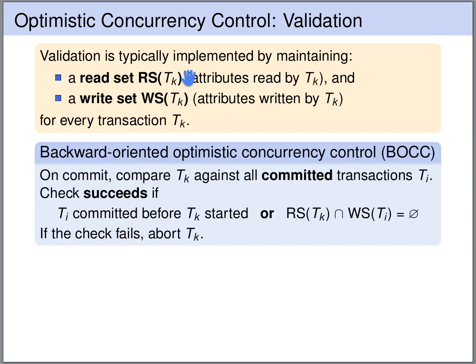There are two flavors of optimistic concurrency control: backward-oriented optimistic concurrency control and forward-oriented optimistic concurrency control. Let's start with the backward-oriented flavor.